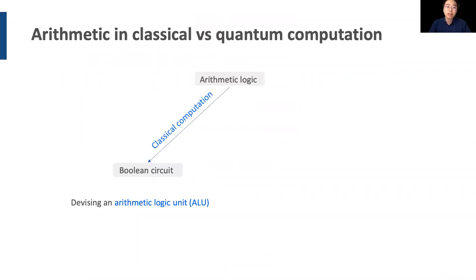Needless to say, arithmetic logic is an important component of classical computation. In a classical computer architecture, we perform arithmetic logic by devising an arithmetic logic unit, or ALU, that consists of adder, subtractor, multiplier circuits, and so on. These circuits are implemented with bitwise Boolean operations, such as AND gates.